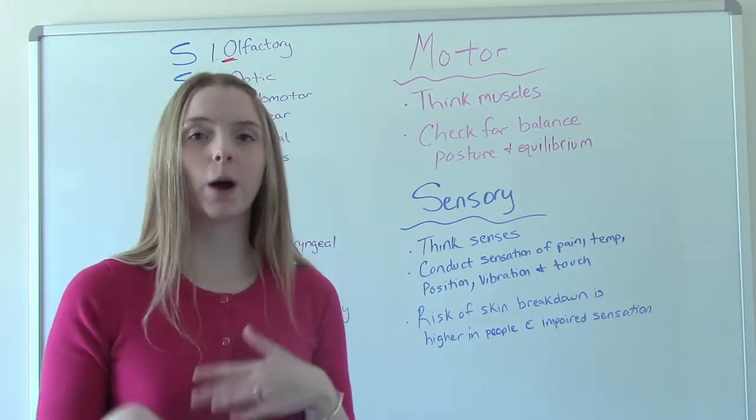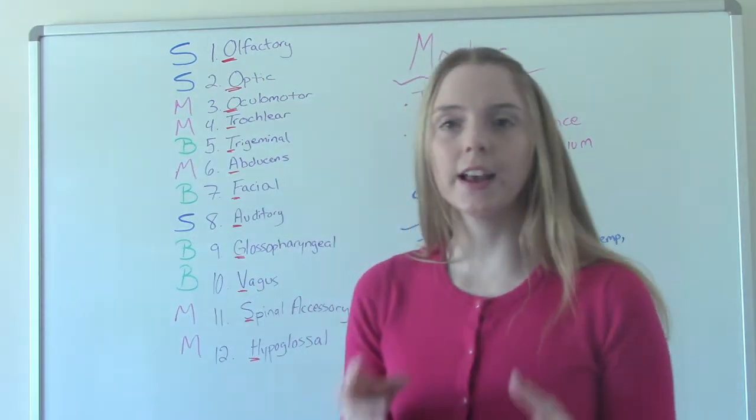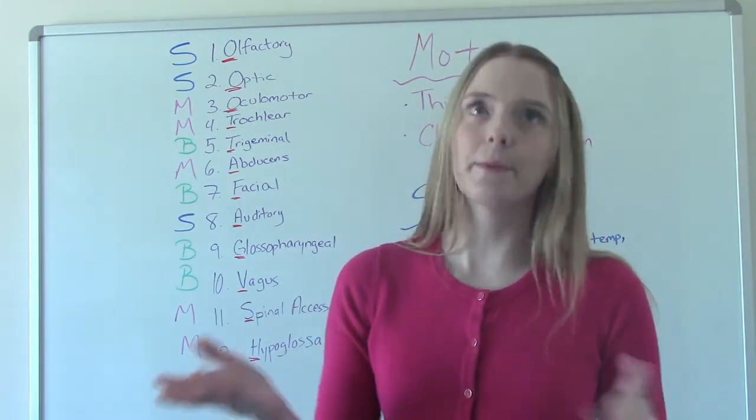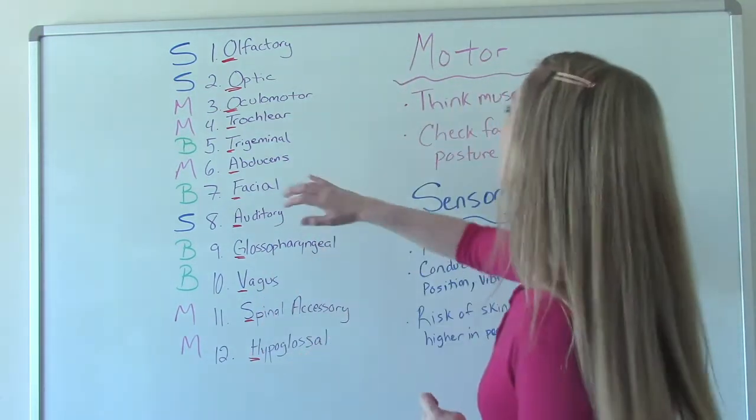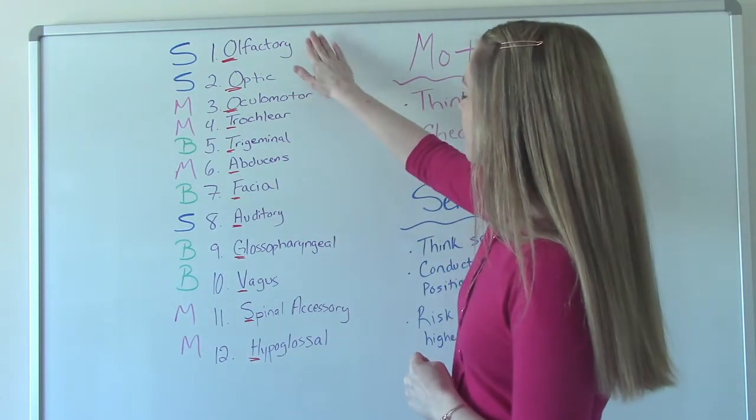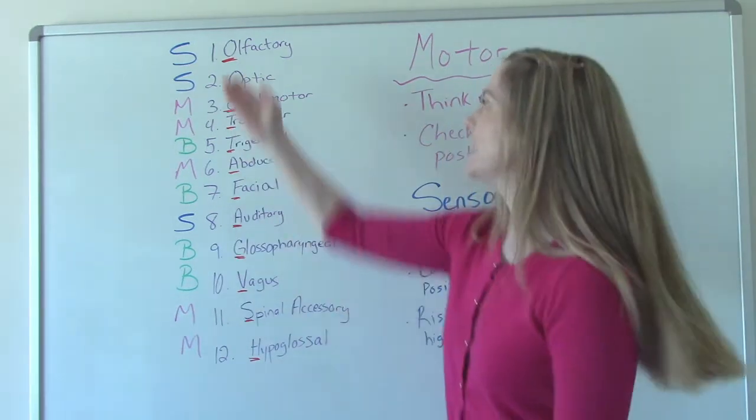So let's get into the chart and talk about which ones are sensory, which ones are motor, and which ones are both. And once we do it, I hope it'll start to make sense. Like, oh yeah, that makes sense why that one's sensory and that one is motor. So olfactory, let's start with our first one, our sense of smell. That's one of our five senses. So it's a sensory one. Easy, right?